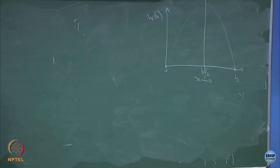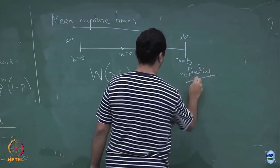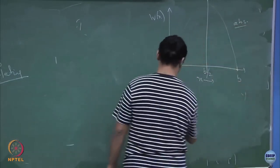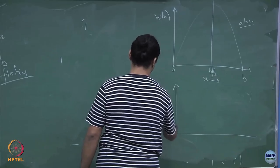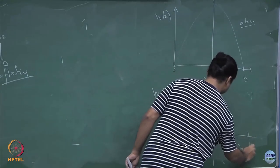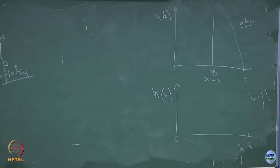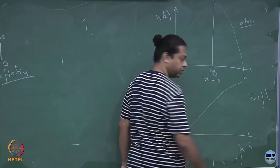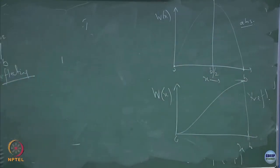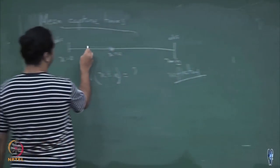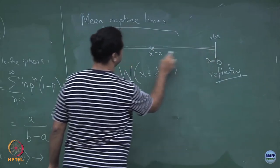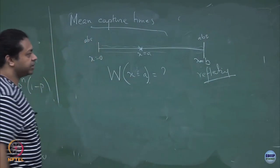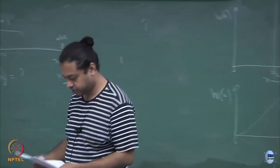On the other hand, if x equal to b was a reflecting wall, it could only get absorbed at x equal to 0. This is for the absorbing case. If I plotted the corresponding graph for w of x versus x between 0 and b for the reflecting case, where would it take the maximum time? At b. So it would look something like this, with maximum at b. Anything released there would also have a path all the way back, which increases the times.